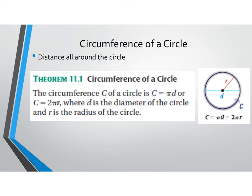The circumference of a circle is the distance all around the circle. The circumference can either be found by multiplying pi times the diameter, or if they give you a radius, you'll multiply 2 times pi times the radius. You can turn a diameter into a radius by dividing by 2, or a radius into a diameter by multiplying by 2. There are two formulas you can memorize.